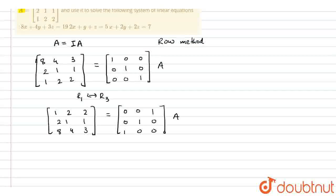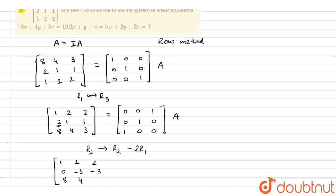The second operation we will apply is R2 = R2 − 2R1, because we have to make 0 in that position. After applying this operation, we get [1, 2, 2; 0, −3, −3; 8, 4, 3], equal to [0, 0, 1; 0, 1, 0; 1, 0, 0] with the corresponding identity update, multiplied by A.